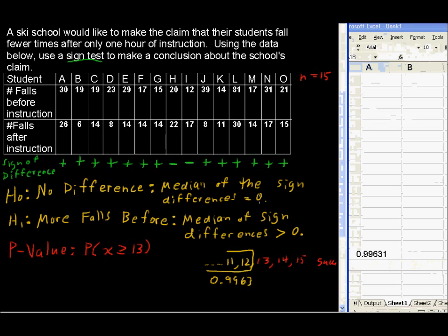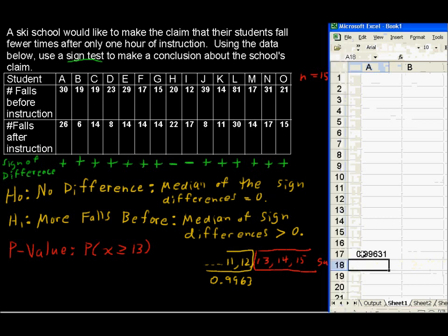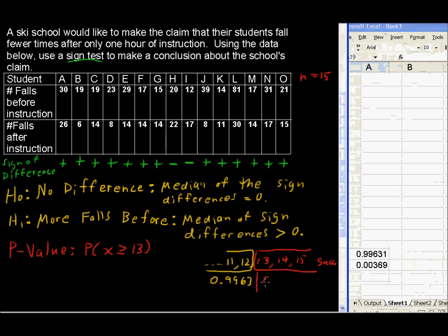What we want is the red probability, the probability of getting something as extreme or more that we did observe. So we're going to say equals 1 minus, by the idea of complements, 1 minus this probability in yellow. This is a low p-value.